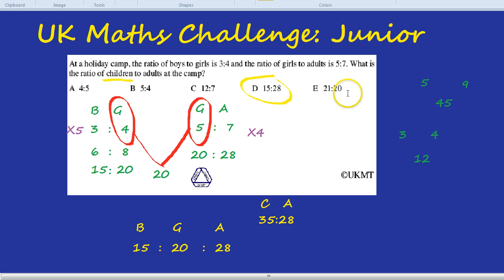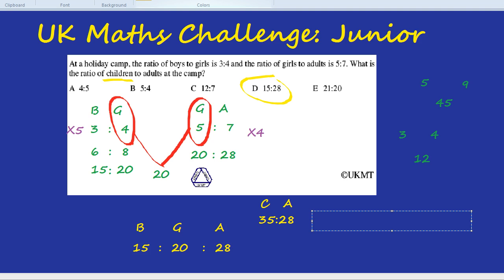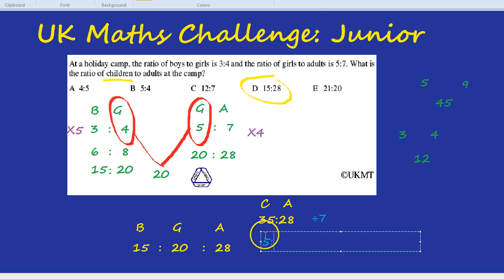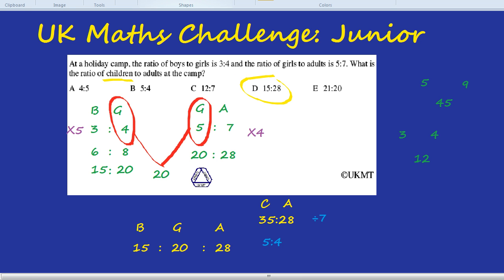You might be wondering, but that's not in the answer. That's not one of the answers. Remember how we could times by any number we want as long as we did it to both sides. We can divide by any number we want as long as we do it to both sides. These two numbers both have 7 in common. So if we divide by 7 to both sides, we get 35 divided by 7 is 5 and 28 divided by 7 is 4. And that would be the ratio of children to adults, which is 5 to 4.